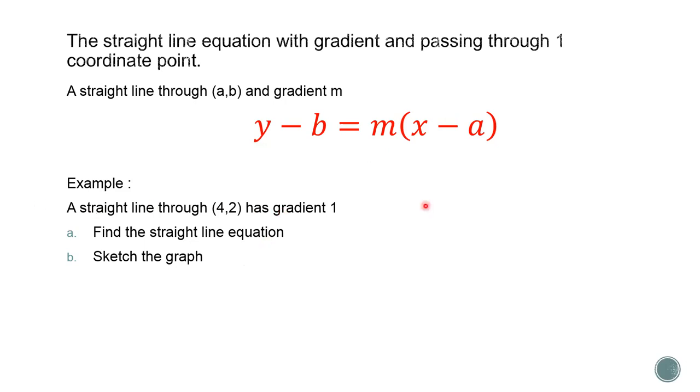For example, this one. A straight line through 4, 2 has a gradient 1. Question a, find the straight line equation. And question b, sketch the graph. All right.